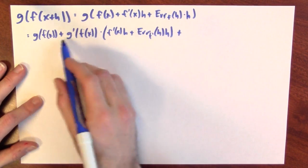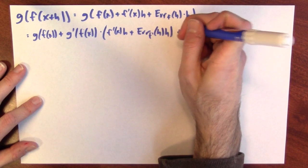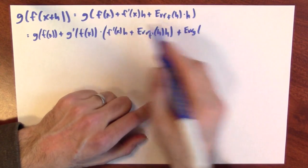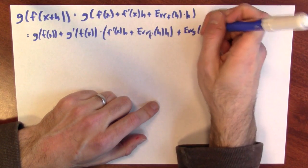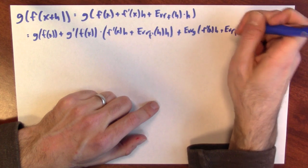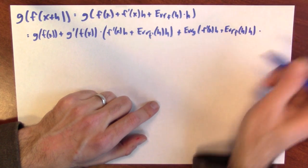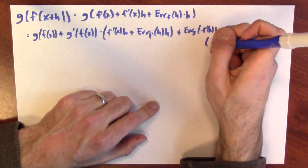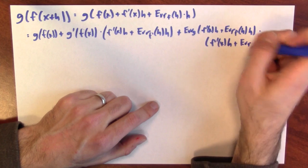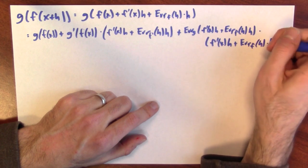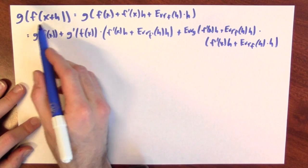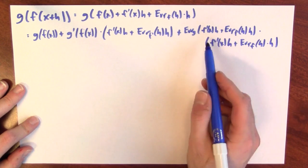Plus an error term for g, which is the error term for g. And I have to put in how much I wiggled by, which in this case is f prime of x h plus the error term for f at h times h, times that same quantity. f prime of x h plus the error term for f at h times h. Alright, so that's exactly equal to g of f of x plus h and I'm including all of the error terms.